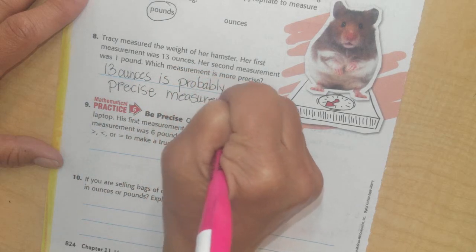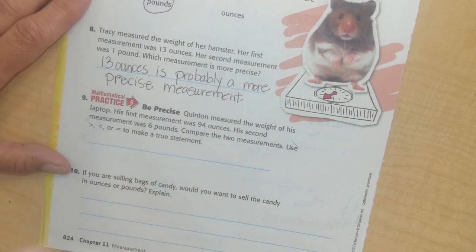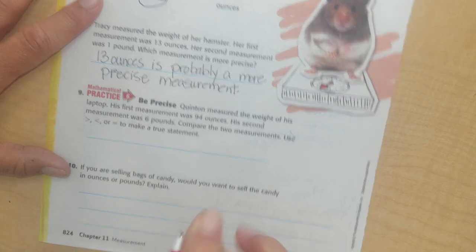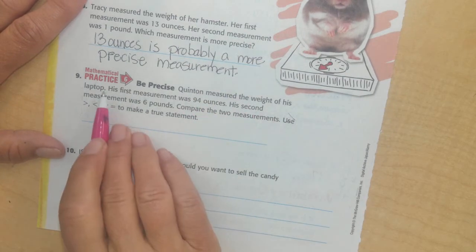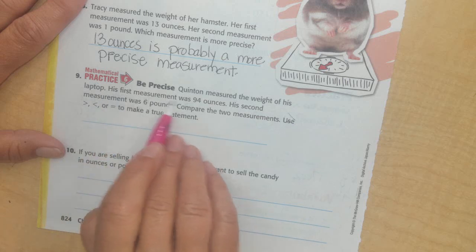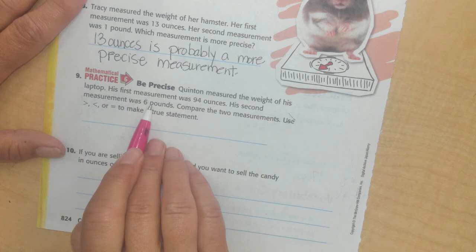probably a more precise measurement. If something is precise, it's like exactly, we just try to make things precise. We want the exact right thing. Alright, here's Quentin. Quentin measured the weight of his laptop. His first measurement was 94 ounces, his second measurement was 6 pounds. Compare the two measurements. Use less than, greater than, equal to.